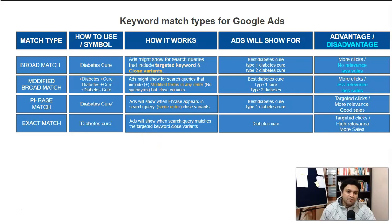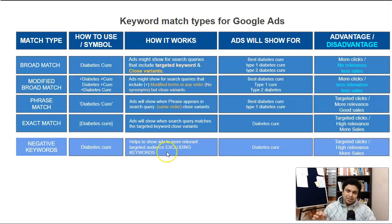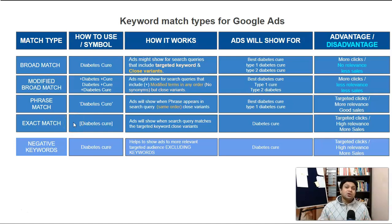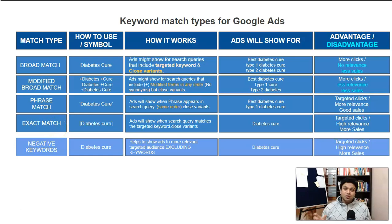Before that, we have one more keyword type: negative keywords. Negative keywords means excluding keywords for which you don't want to show your ads. Even with exact match, you might be losing buyer-intent phrases like 'how to cure type 1 diabetes.' That's why you also use phrase match and modified broad match. Along with those, you sometimes remove keywords you don't want triggering your ads by adding them as negative keywords.